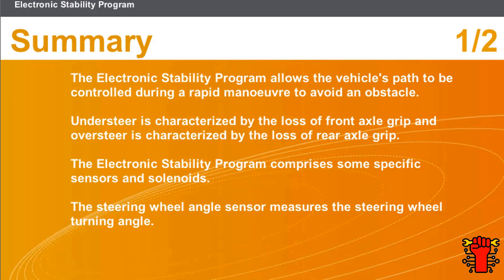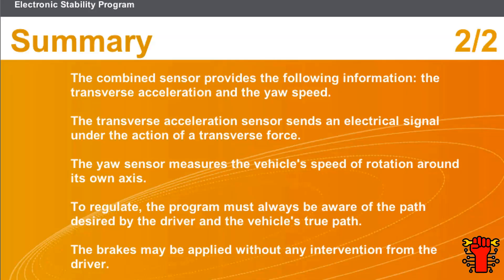In summary: the electronic stability program allows the vehicle's path to be controlled during a rapid maneuver to avoid an obstacle. Understeer is characterized by the loss of front axle grip, and oversteer is characterized by the loss of rear axle grip. The program comprises specific sensors and solenoids. The combined sensor provides transverse acceleration and yaw speed. The transverse acceleration sensor sends an electrical signal under the action of a transverse force. The yaw sensor measures the vehicle's speed of rotation around its own axis. To regulate, the program must always be aware of the path desired by the driver and the vehicle's true path.